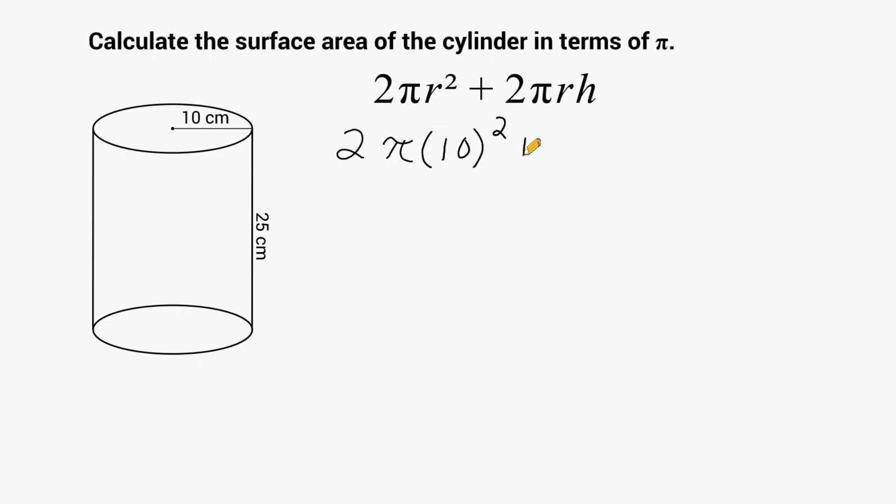And then on the right-hand side of our plus sign, we have radius again, which we substitute with 10 again, and we have to multiply that by the height of the cylinder, which is 25 centimeters.